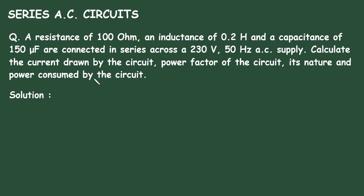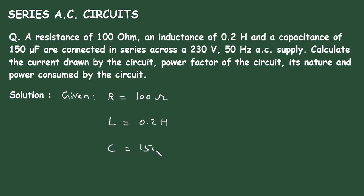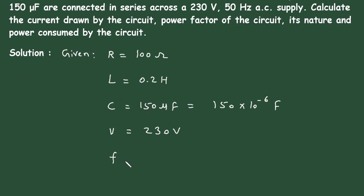Solution. First of all, we will write what is given. The value of resistance is R = 100 Ohm. The value of inductance is L = 0.2 Henry. The value of capacitance is C = 150 microfarad, which is 150 × 10⁻⁶ Farad. Voltage is V = 230 volt. Frequency is F = 50 Hz.